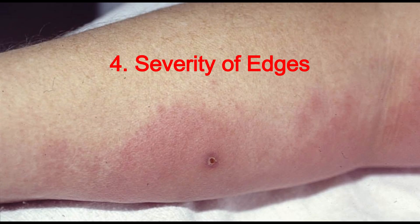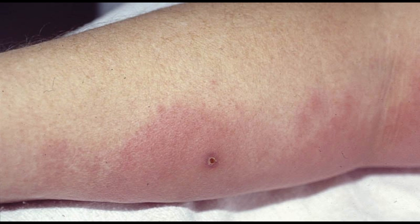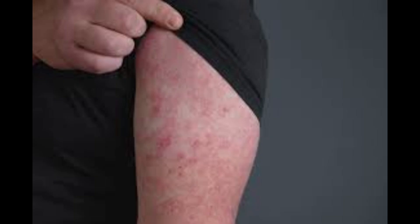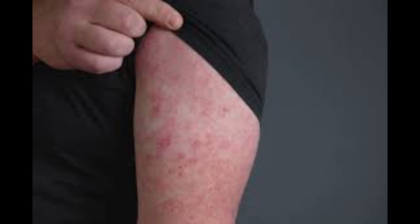Four, severity of edges. Cellulitis edges blend into the surrounding skin with no clear demarcation. Erysipelas edges are sharply demarcated. Five, depth of infection. Cellulitis involves the deeper dermis and subcutaneous tissue. Erysipelas is limited to the upper dermis and lymphatic vessels.